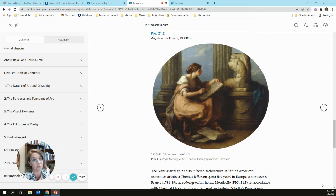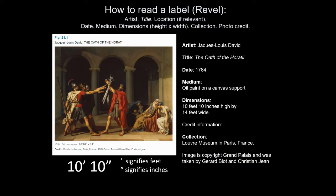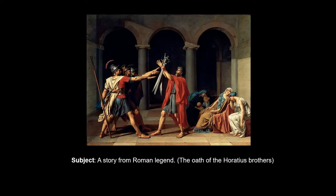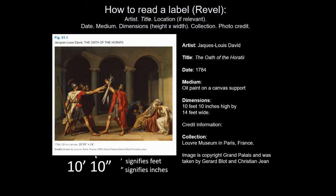Now let's move on to subject. What is this a painting of? A whole bunch of people in a room. The title is Oath of the Horatii. The subject of this work of art is a story from Roman legend — the oath of the Horatius brothers — something you might need to look up to fully understand the piece.